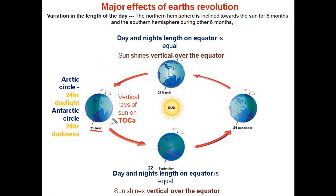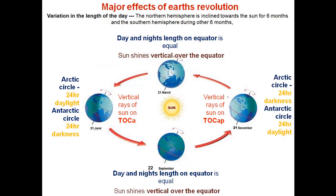On 21st June, the vertical rays of the sun will fall on the Tropic of Cancer, due to the inclination of the earth at 23 degrees 30 minutes facing towards the sun. On that day, the Arctic Circle will experience 24 hours of daylight and the Antarctic Circle will experience 24 hours of darkness. On 21st of December, vertical rays will fall on the Tropic of Capricorn in the southern hemisphere, due to the inclination of the earth toward the sun. The southern hemisphere faces toward the sun. On this day, the Arctic Circle will experience 24 hours of darkness and the Antarctic Circle will experience 24 hours of daylight.